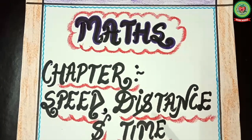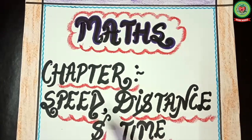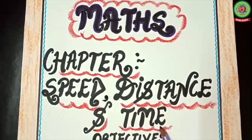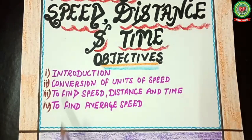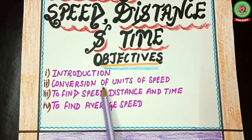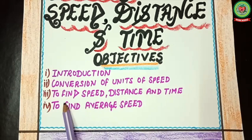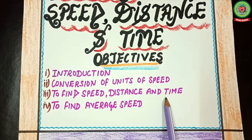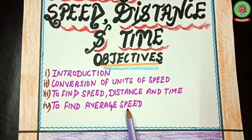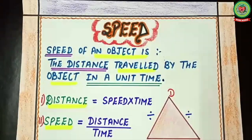Dear students, today we are going to start with a new chapter that is Speed, Distance and Time. The objectives of this chapter are: number one, introduction to the chapter; number two, conversion of units of speed; number three, to find speed, distance and time; and number four, to find the average speed. So let's get started.